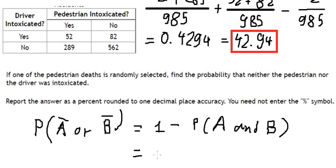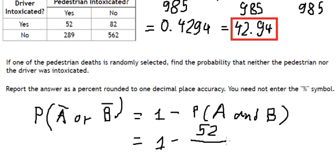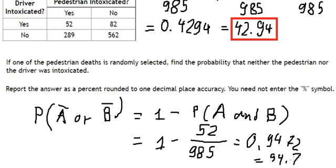So A and B is 52, divided by 985. We get 0.9472, or about 94.72 percent. This is the answer for question number three.